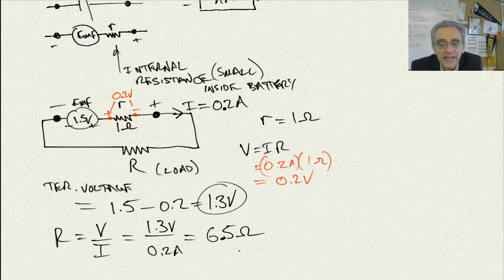Now understand that the more current that flows through the battery, it means that the higher the internal resistor's drop will be. And now you understand.